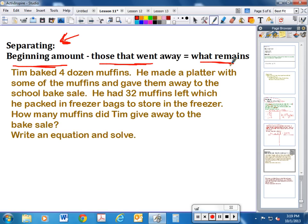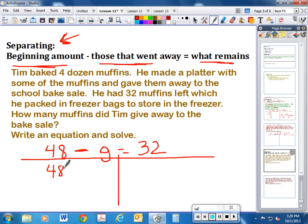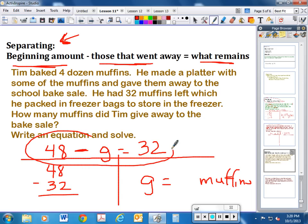Okay. Tim baked four dozen muffins. He made a platter with some of the muffins and gave them away to the school bake sale. He had 32 muffins left which he packed in freezer bags to store in the freezer. How many did he give away? Now we know at the beginning that he had four dozen, and we're going to go ahead and change that to 48, because a dozen is 12, 12 times 4 is 48. We don't know how many he gave away. We just know that he had 32 remaining at the end. And of course we would solve this by subtracting. So 48 minus 32, you would solve it, and then you would put G equals—over here you need your number in muffins. I'm not going to worry about solving this right now guys, because you know how to do that part. This is what I'm keying in on today.